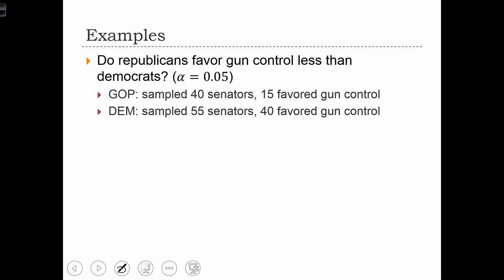We conduct two samples. Let's let the Republicans be the first sample. So N1 is 40, and 15 of them favored gun control, so P1 is 15 over 40. N2 was 55, so there's 55 Democrats, and P2 equals 40 over 55.